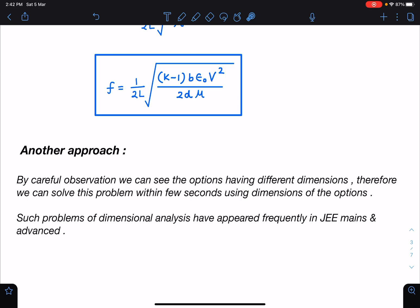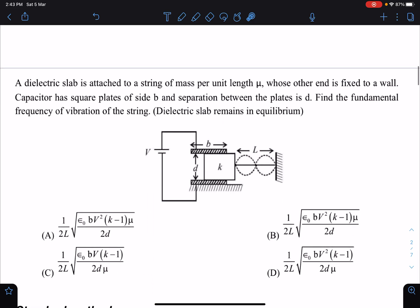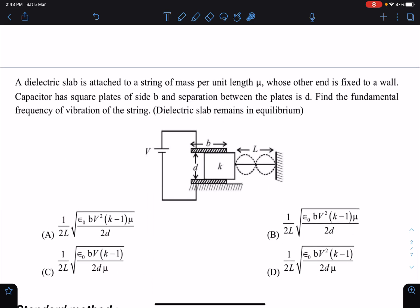Now if you see this question carefully, I'll just brief you about the second method. You can see by careful observation, the options have different dimensions. Therefore we can solve this problem within few seconds using dimensions of the options. Such problems have come very frequently in JEE mains as well as JEE advance, so I'll recommend students to keep that in mind.